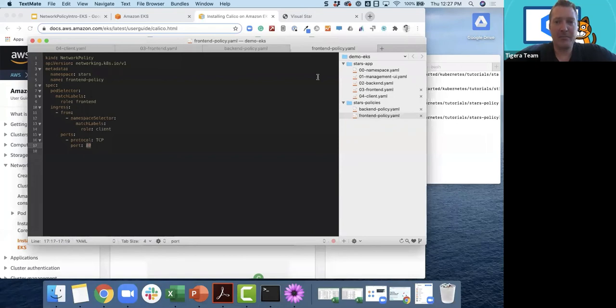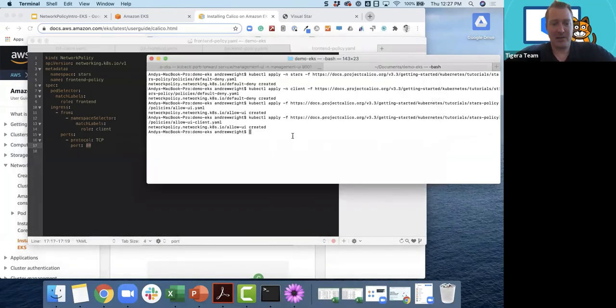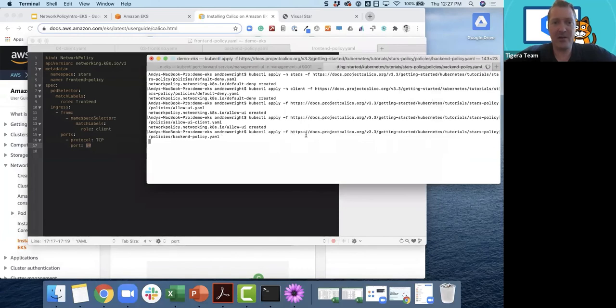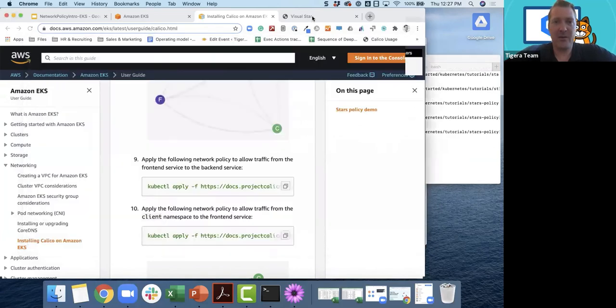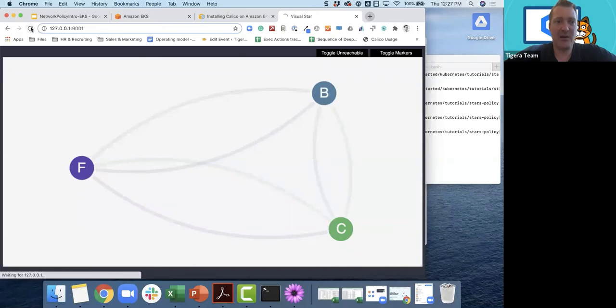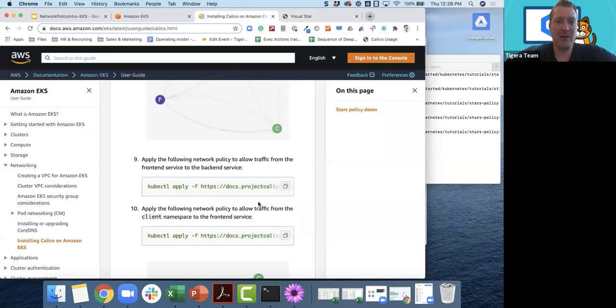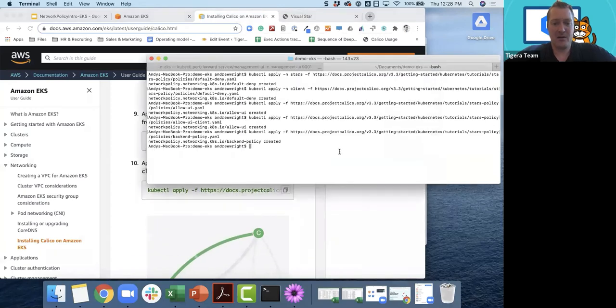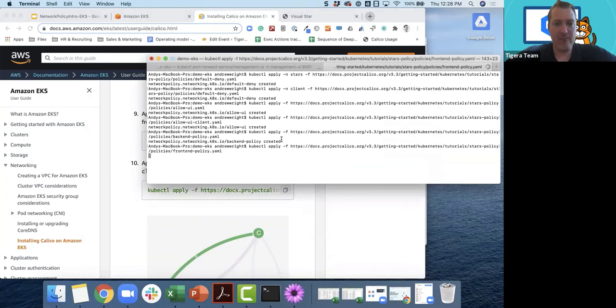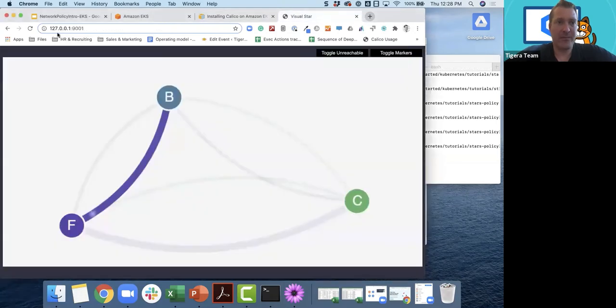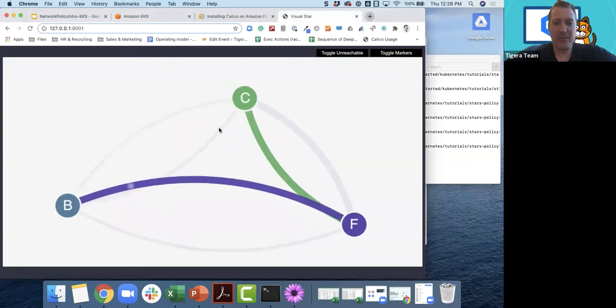This is the frontend one, and it's only going to allow port 80. We'll go ahead and execute this. This is the backend policy. We should see now that the backend is allowing ingress from the frontend. There we go. Now the next thing is to allow ingress to the frontend from the client, and that would be the next that we type in. And there we have it.